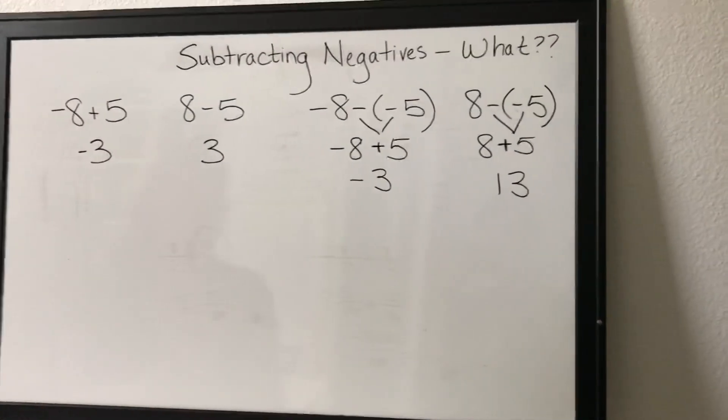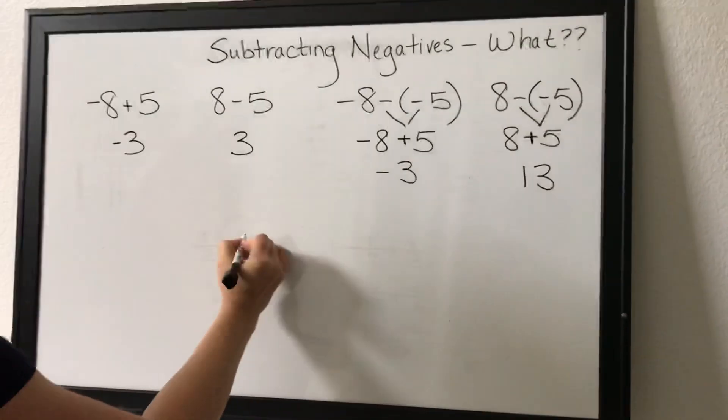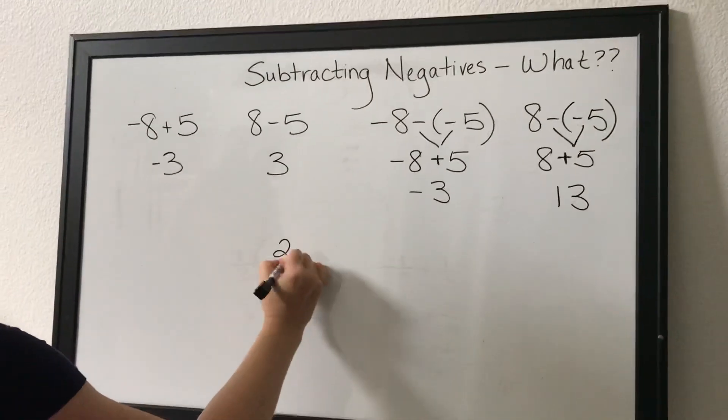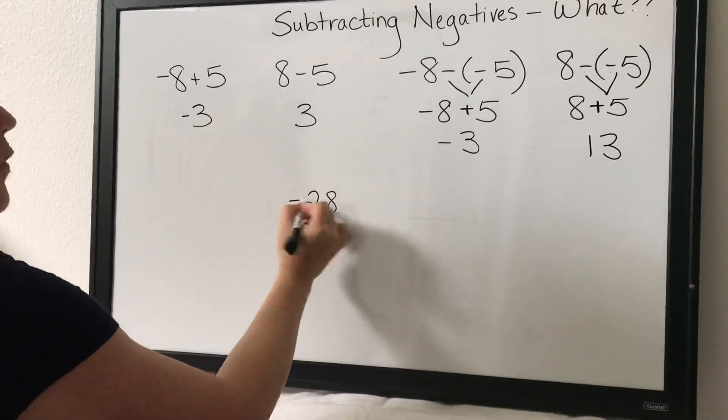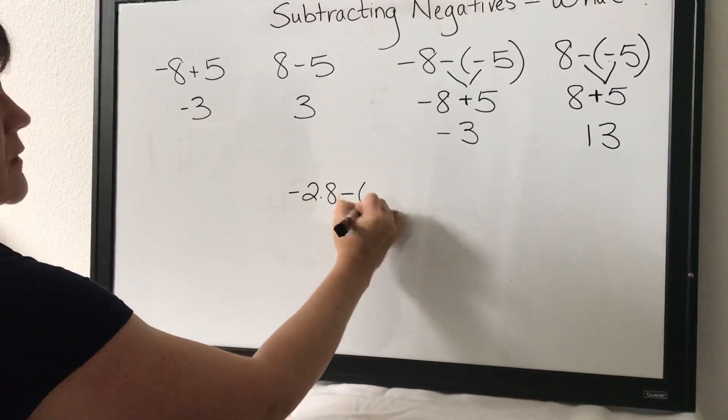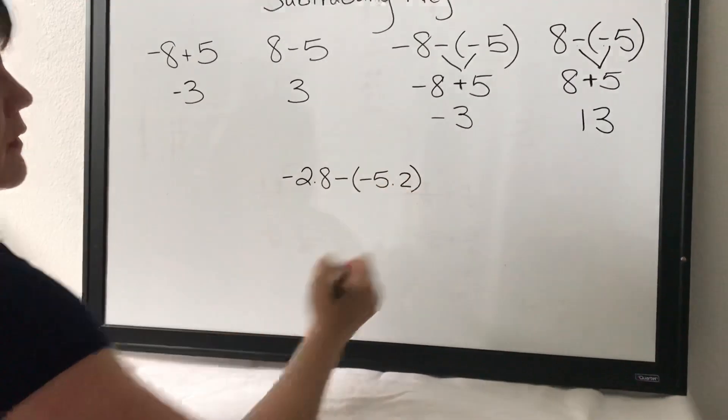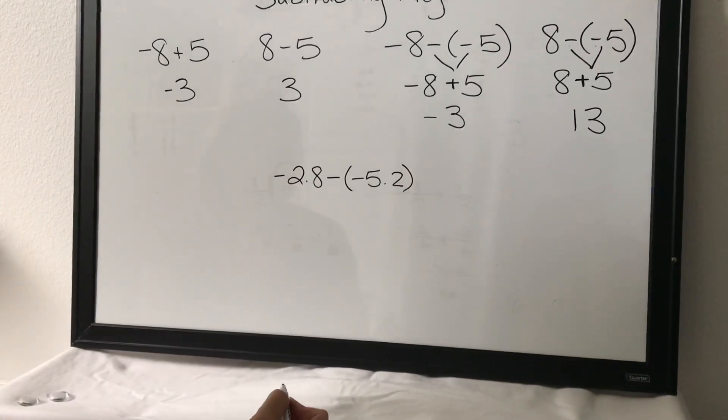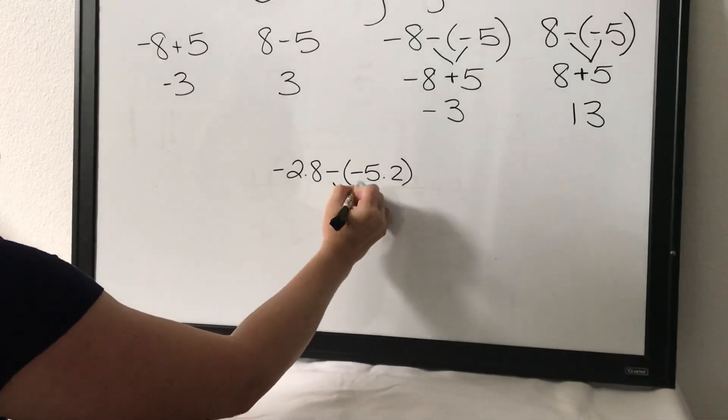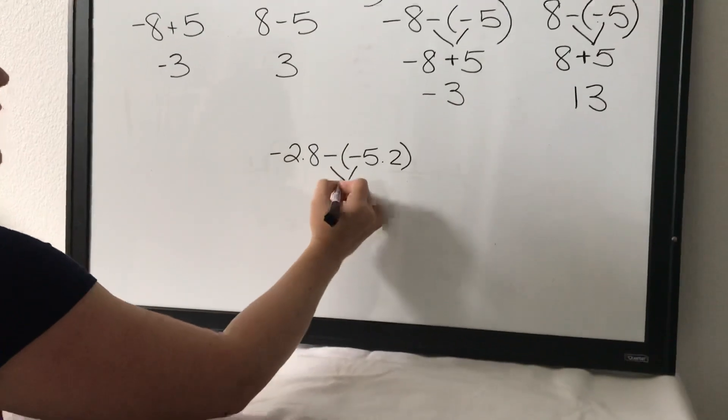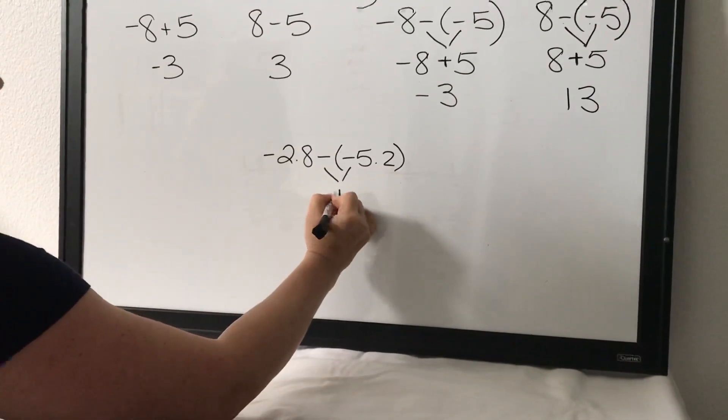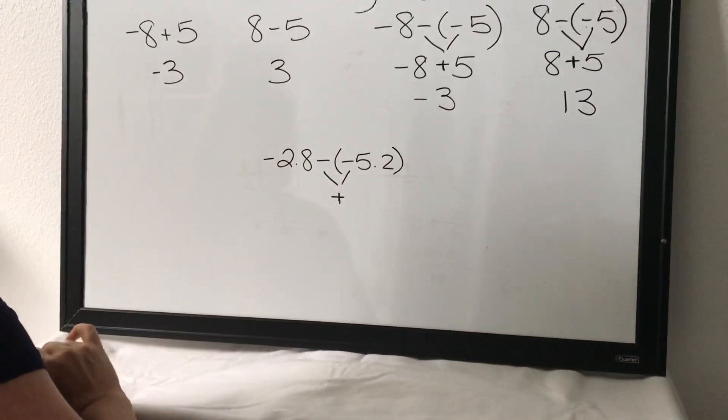Now it can get kind of ugly when we have say decimals. Negative 2.8 minus negative 5.2. It just looks complicated. So first thing I want you to do is simplify it. Take that double negative and simplify your sign.